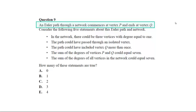In the network there could be three vertices with a degree equal to one. Now one's an odd number. We've said that in order to have an Euler path you can only have two vertices of an odd degree. So that statement is incorrect.